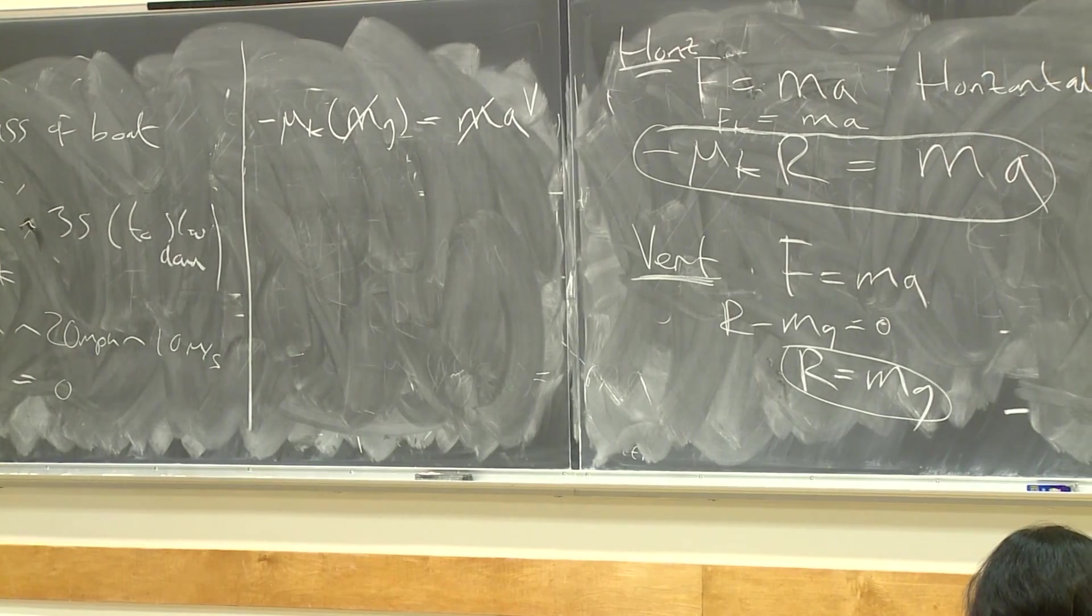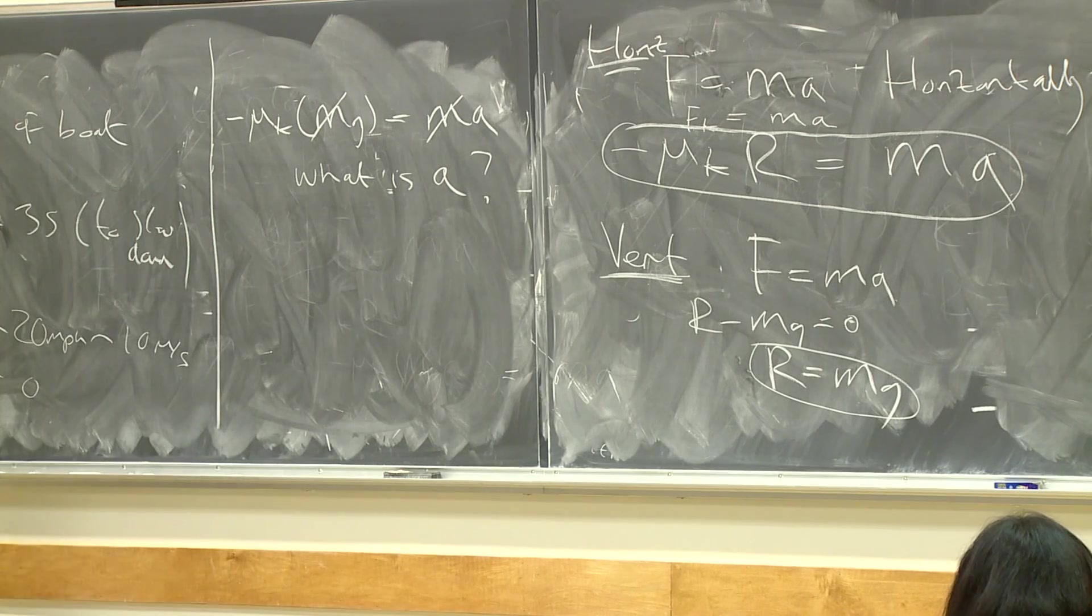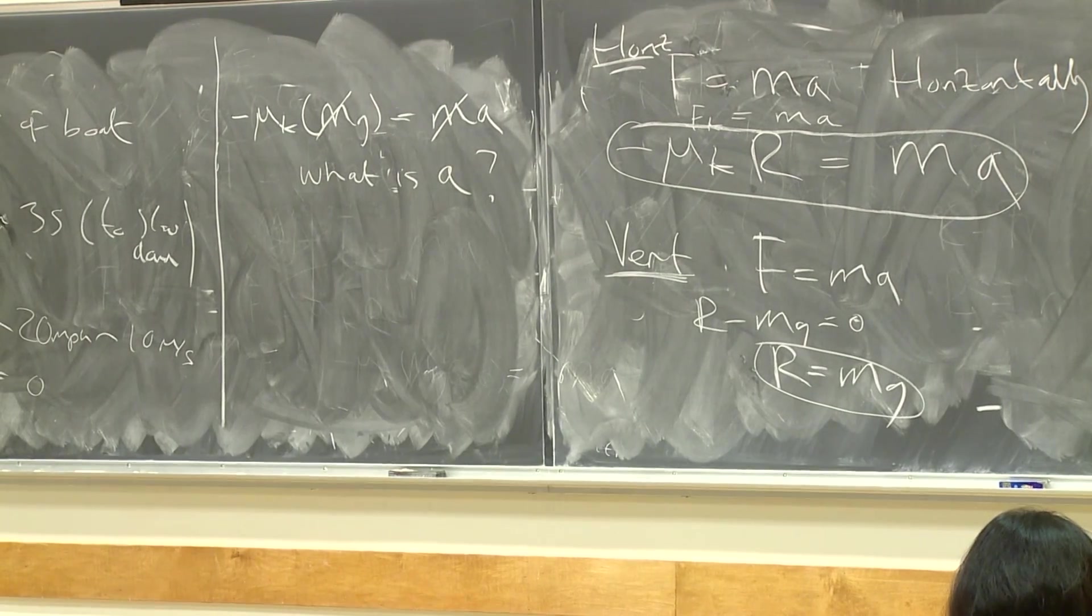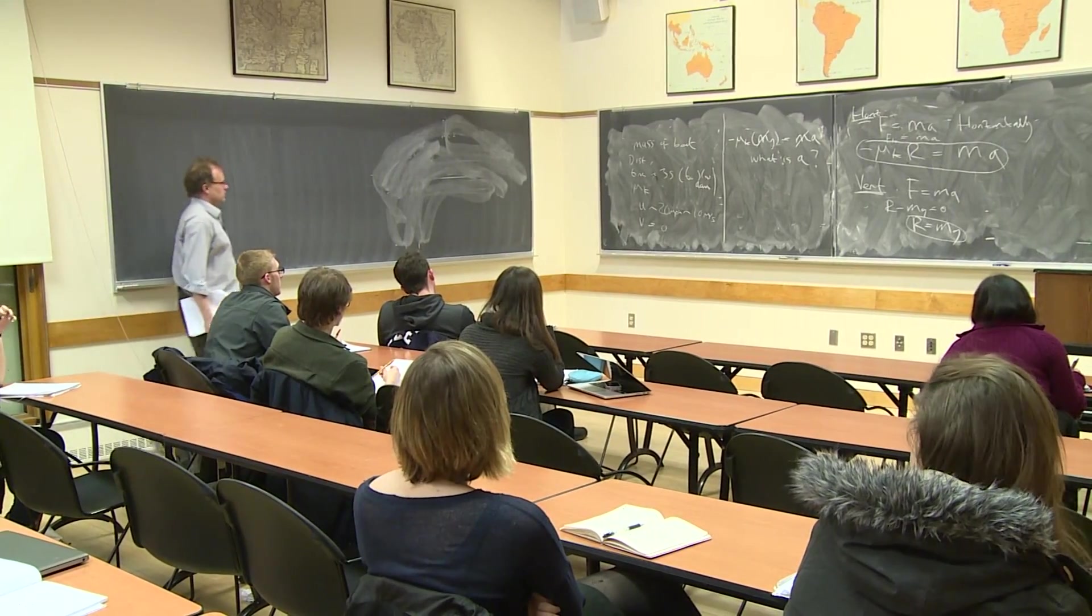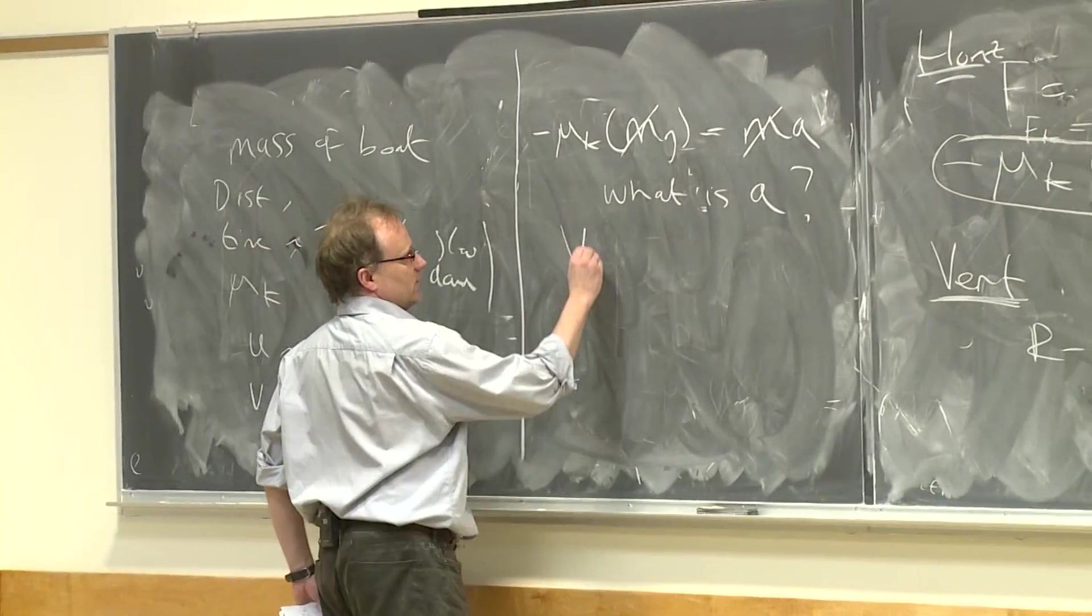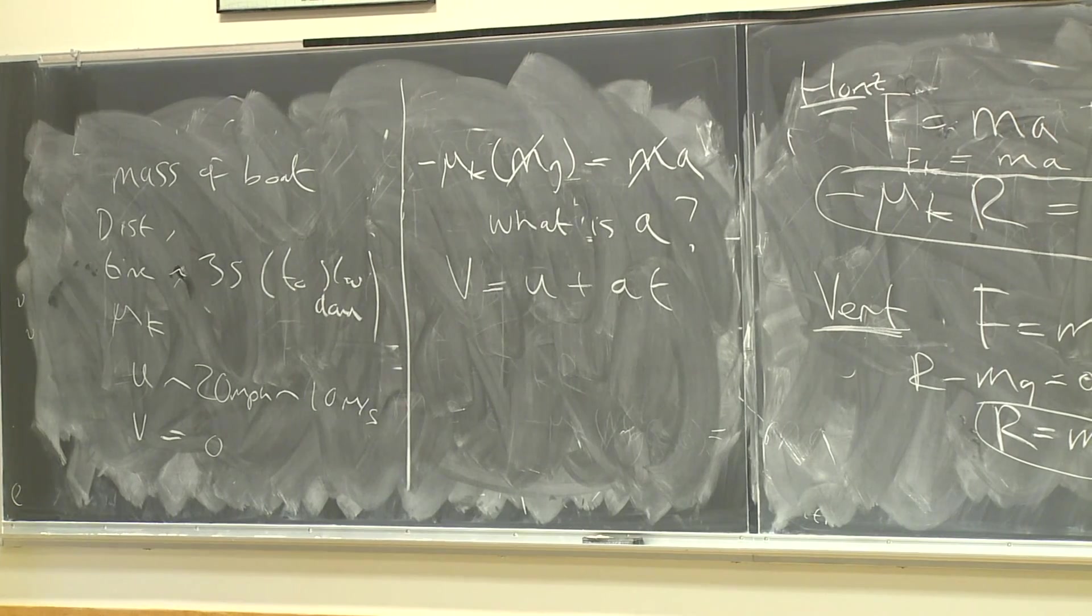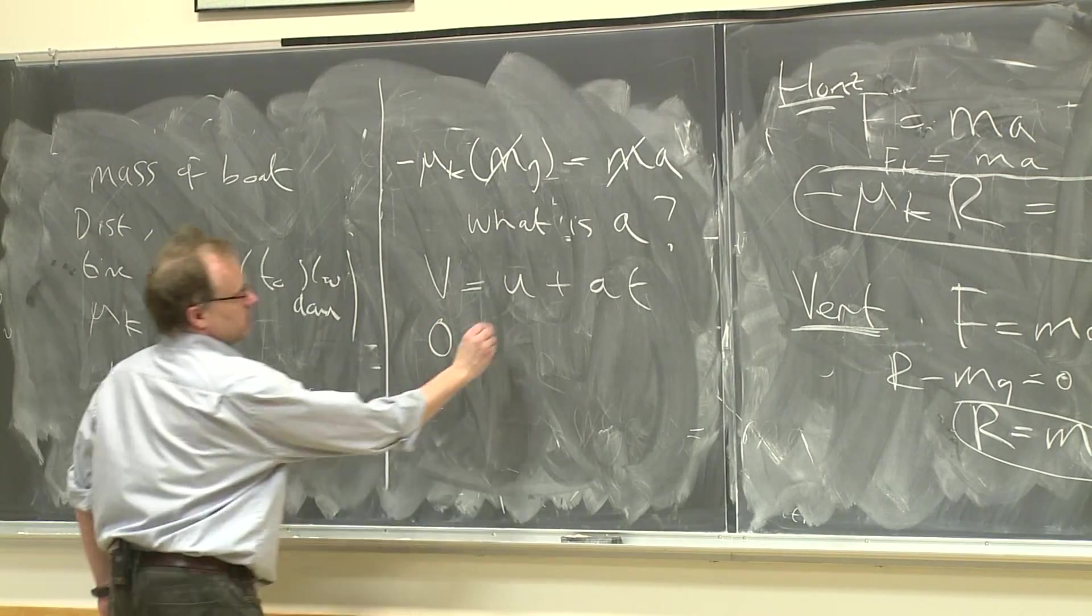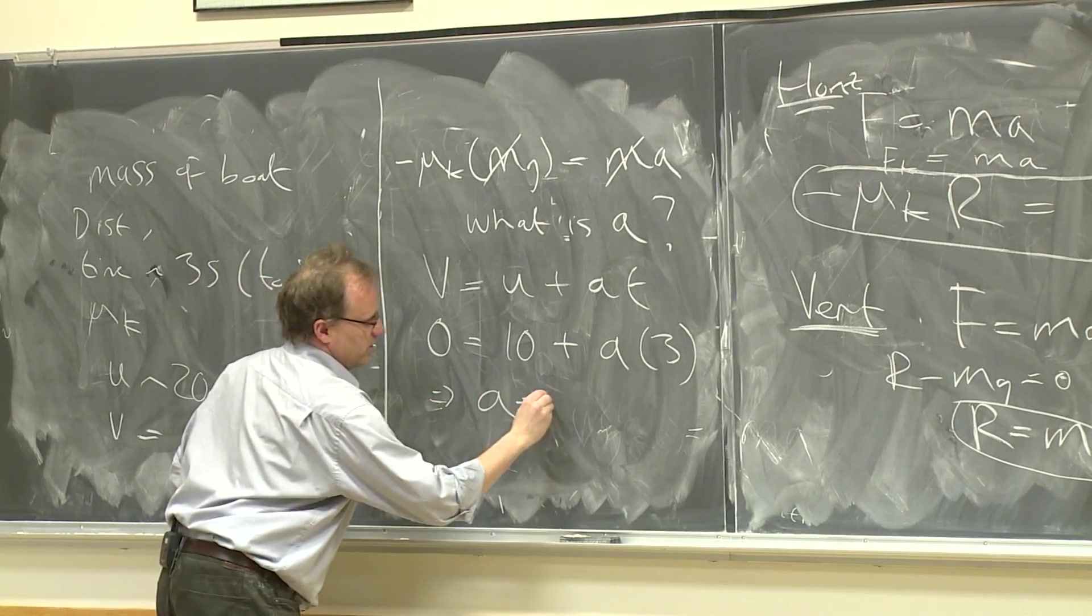So what is a? How do we find out a? Need some help. Somebody who hasn't spoken before, how am I going to find out a? We've got information. Right, so we should use the time. We have V equals U plus aT, and the a is the horizontal acceleration, nothing to do with g. So then we plug in the values: we have zero equals 10 plus a times by 3, which gives us that a is minus 10 over 3.